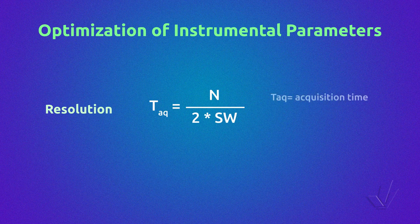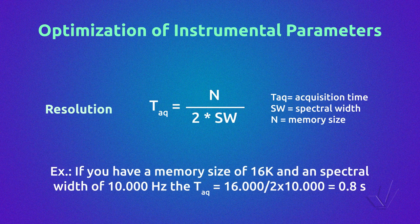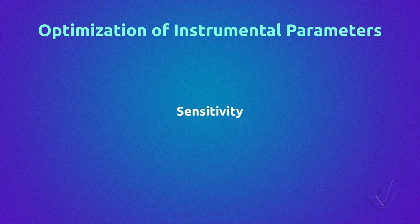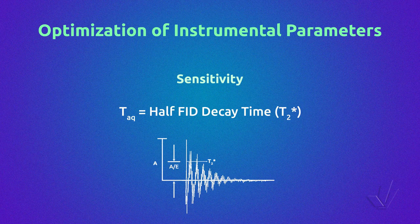Optimization of instrumental parameters should lead to a spectrum with good resolution and sensitivity. The following equation relates acquisition time with spectral width and memory size. For example, with a memory size of 16K and a spectral width of 10,000 Hz, the acquisition time should be 0.8 seconds. To have good sensitivity — a high signal-to-noise ratio — the acquisition time should equal the half-FID decay time. When both sensitivity and resolution are important, a compromise must be reached.